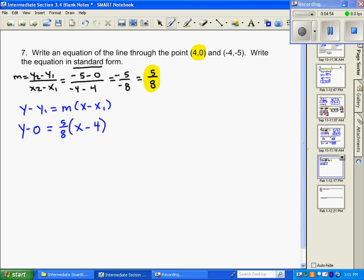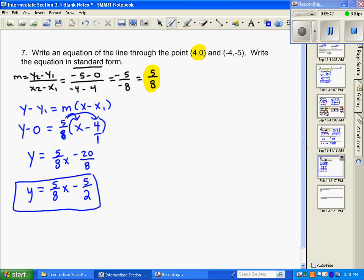So now we want to simplify. y minus 0 is just y. Distribute here, and we get 5 eighths x. And then when we distribute here, I'm going to put 4 over 1 and multiply straight across, and that's going to give me negative 4 times 5 is 20. And then on the bottom, 8 times 1 is 8. So we want to simplify this still. y equals 5 eighths x minus, divide both sides by 4, and we will get a 5 over 2. So this is our slope-intercept form of an equation. This would be slope-intercept.